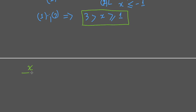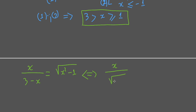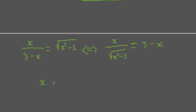Now we have x over (3 minus x) equal to the square root of x squared minus 1. We transform this a bit. When x equals 1, the right hand side equals 0 but the left hand side is different from 0, so 1 is not a root of the equation. We can move terms to the denominator and transform the equation into x plus x over (x squared minus 1) equal to 3.